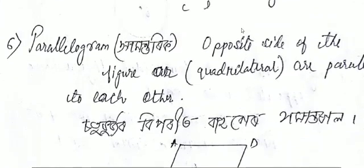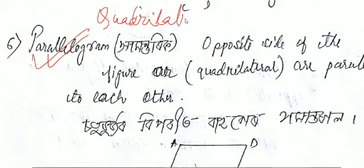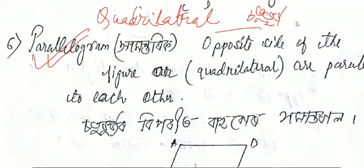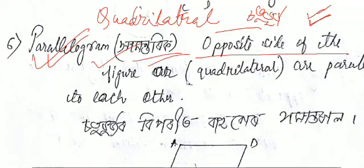Next is the parallelogram. The parallelogram is a quadrilateral where every opposite side looks like a square or rectangle, and the opposite sides of the figure are parallel to each other.